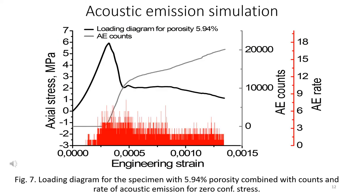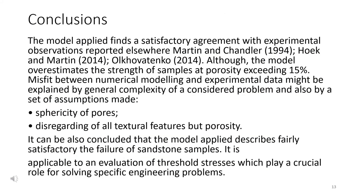Simulated acoustic emission is illustrated in Figure 7. Regarding the evaluation of threshold stress, the ratio between the crack initiation stress and peak stress is approximately 0.25, and the ratio between the crack damage stress and peak stress is approximately 0.84. Both these ratios show satisfactory agreement with experimental data reported elsewhere, including results by Martin and Chandler, Hoek and Martin, and also by Al-Hawatinka.